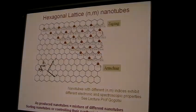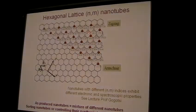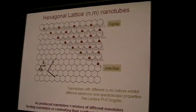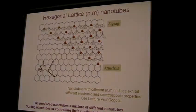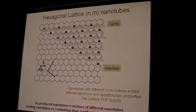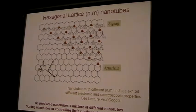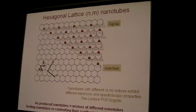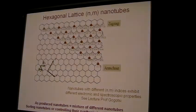What I'd like to say is that today, as-produced carbon nanotubes are a mixture of all these types, and there is still a big challenge in this field to sort carbon nanotubes if you want to use them for electronic applications, or to control their growth and produce nanotubes with well-defined chirality or well-defined indices. Today this is still very difficult and still the topic of very active research.